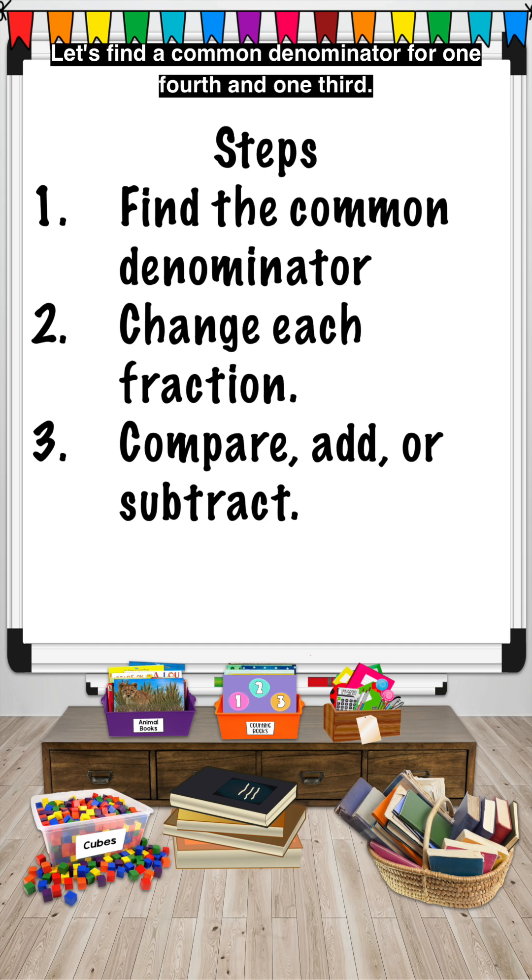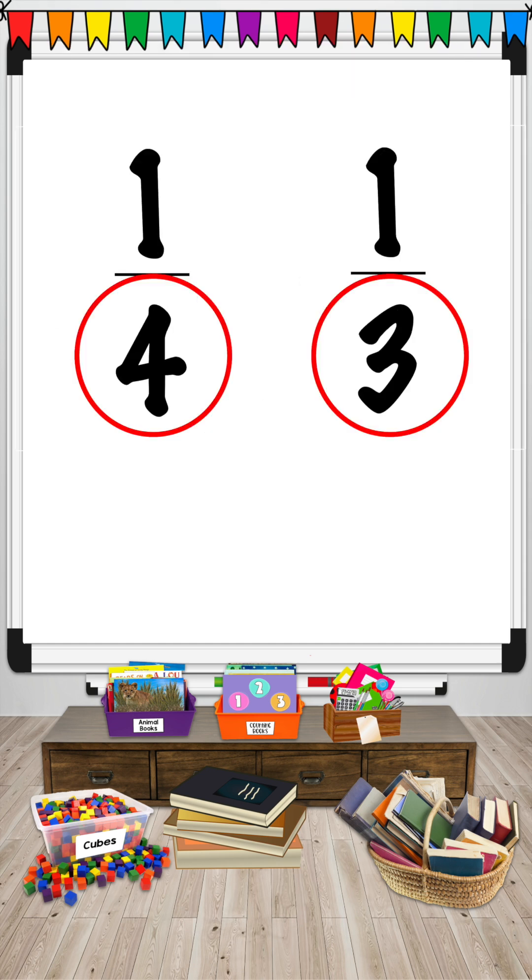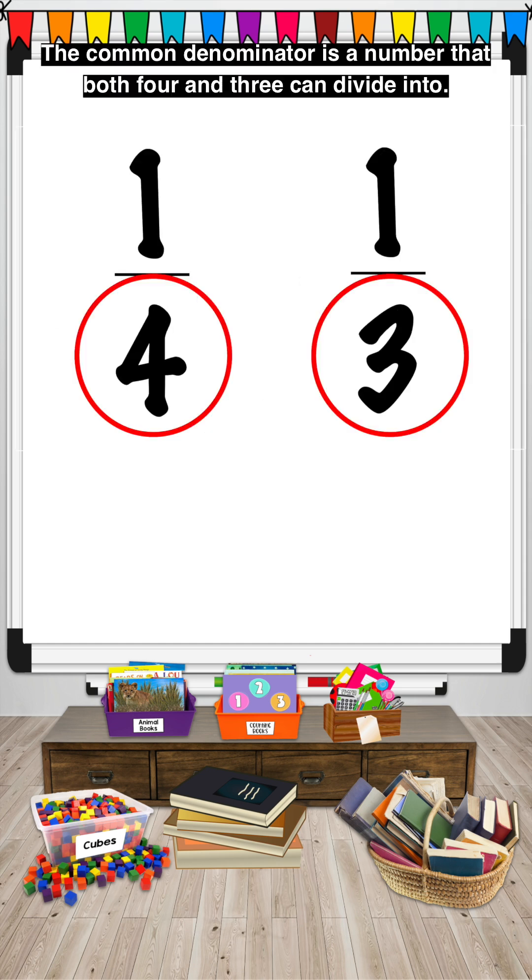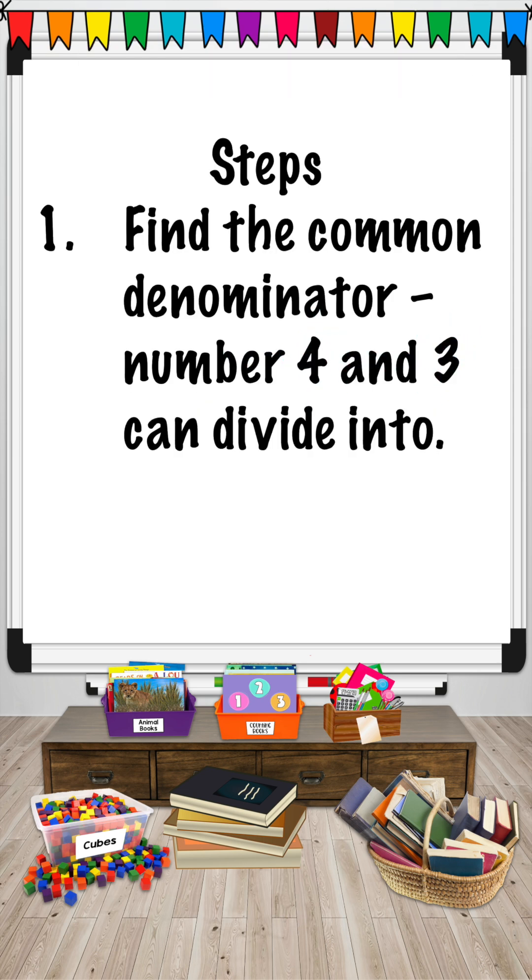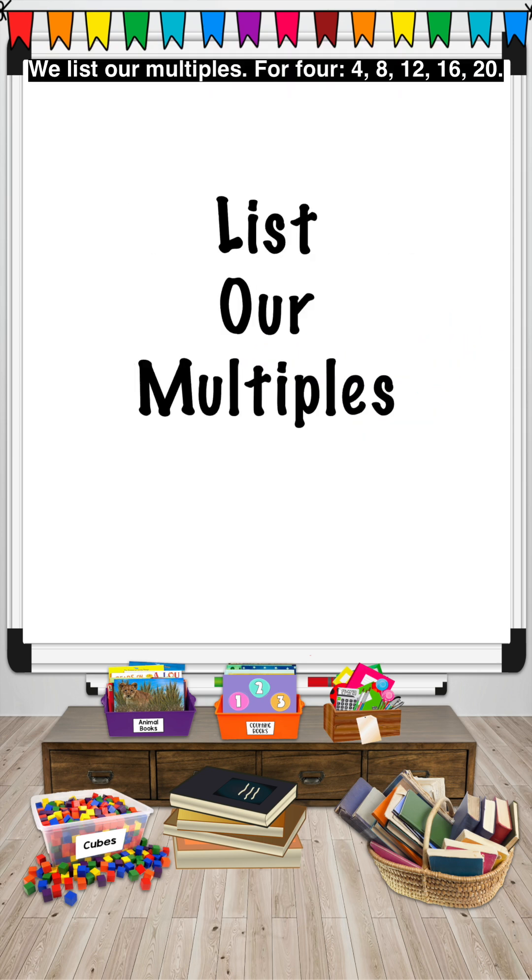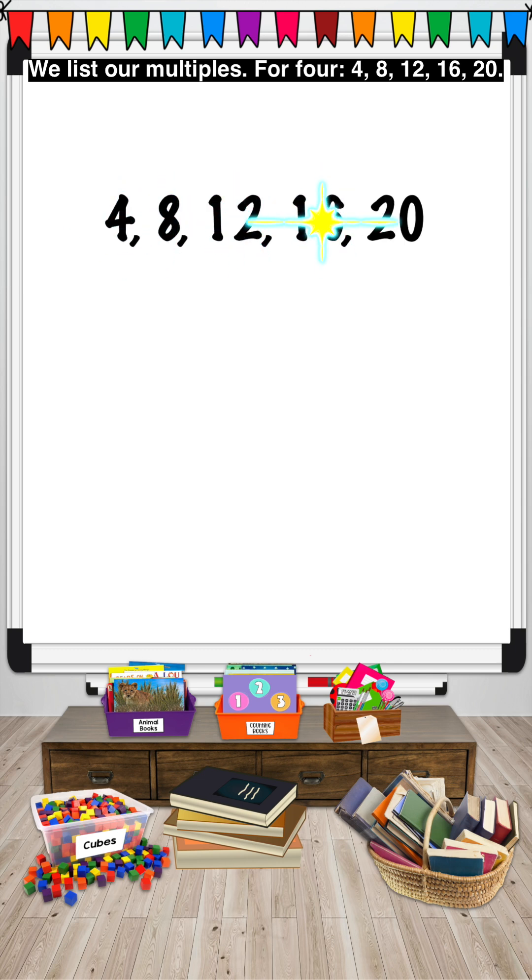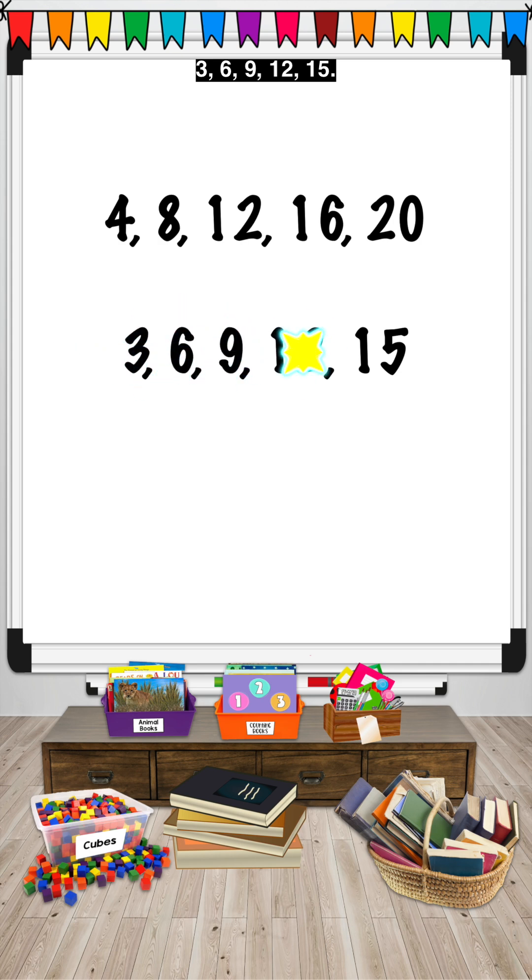Let's find a common denominator for one-fourth and one-third. The common denominator is a number that both four and three can divide into. We list our multiples. For four: four, eight, twelve, sixteen, twenty. For three: three, six, nine, twelve, fifteen.